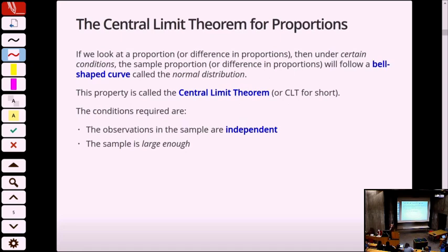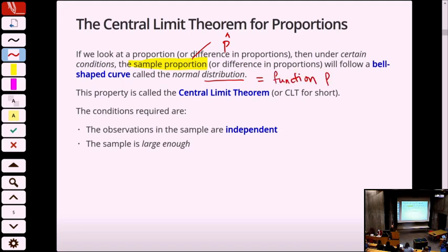This is what leads to the central limit theorem. The central limit theorem says: if we look at a proportion — and all of the examples we've looked at so far have been proportions — then under certain conditions, the sample proportion (p-hat, our guess from the data) will follow a bell-shaped curve called the normal distribution. In statistics, 'distribution' is the same as 'function family.' This is called the central limit theorem, often shortened as CLT.